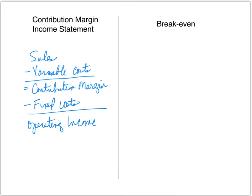What you'll notice with the contribution margin income statement is that costs are separated by how they behave. We have variable costs up top, and all fixed costs below. We calculate contribution margin by only subtracting variable costs from sales, and then operating income is derived by subtracting fixed costs from contribution margin.